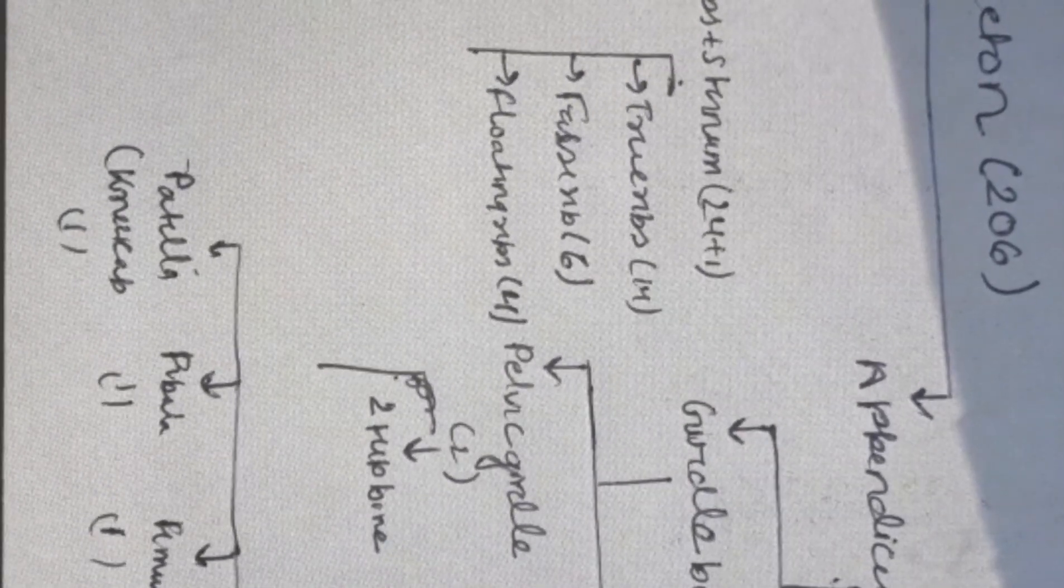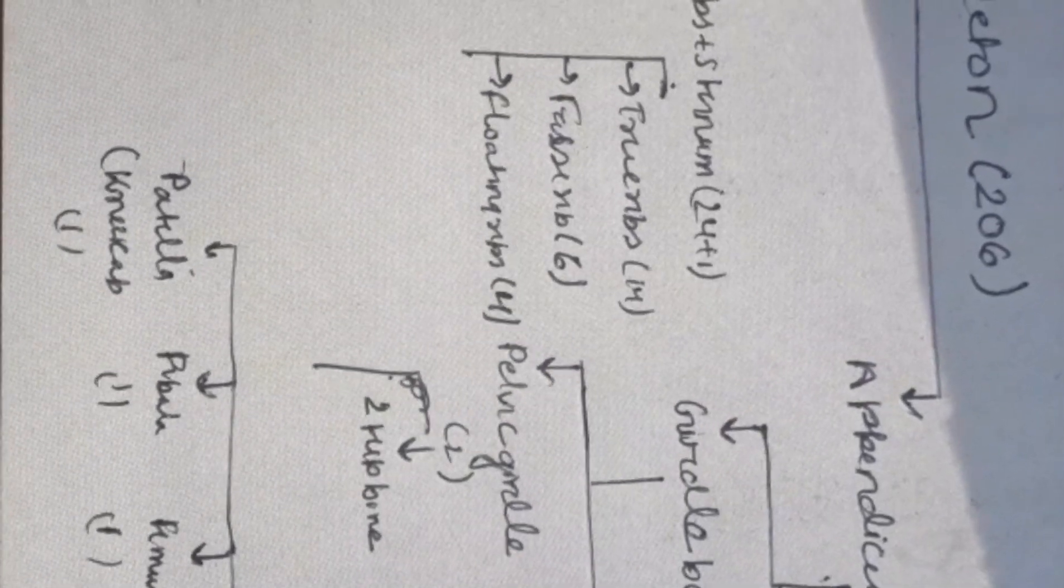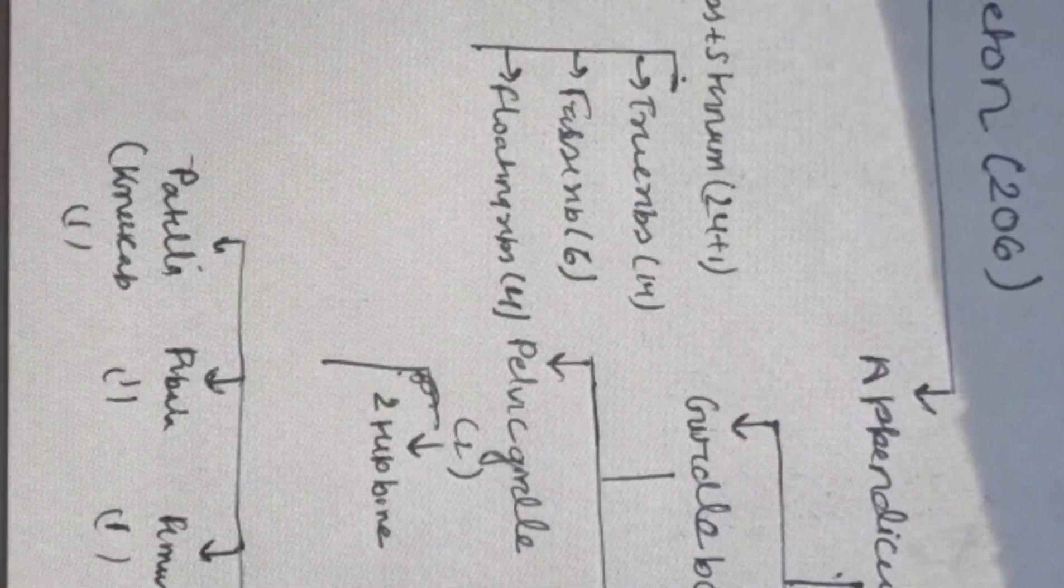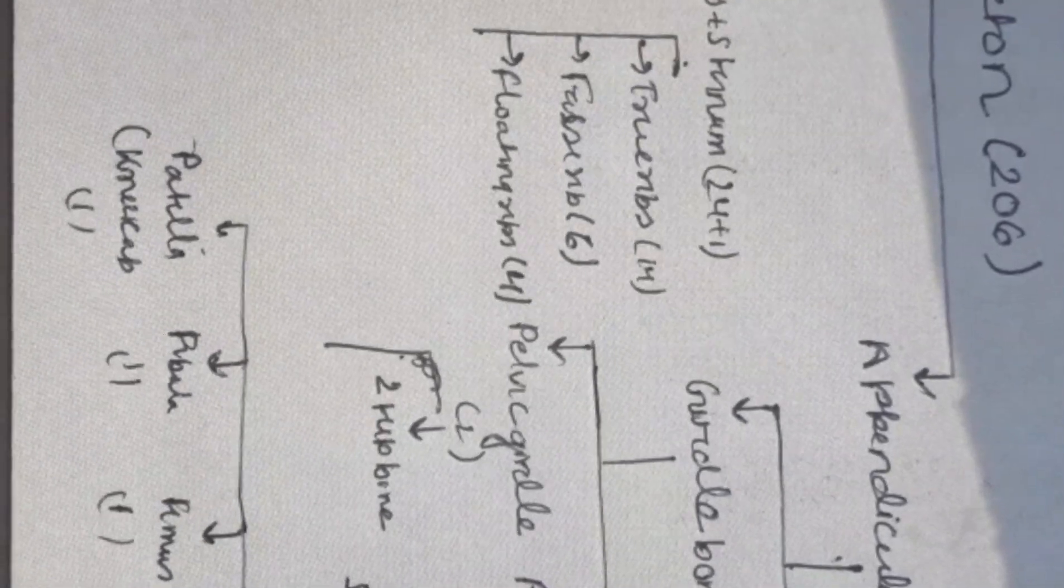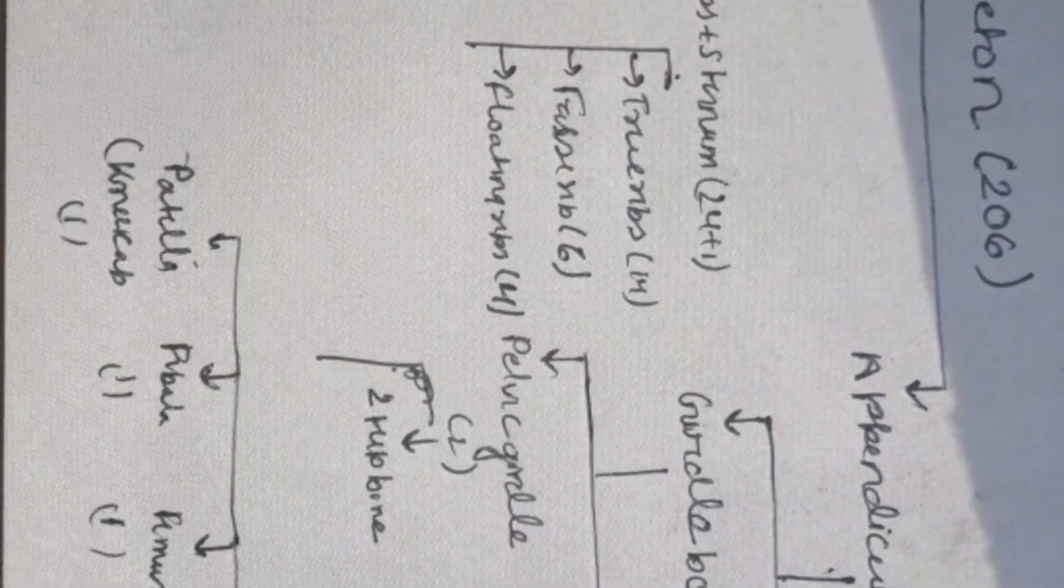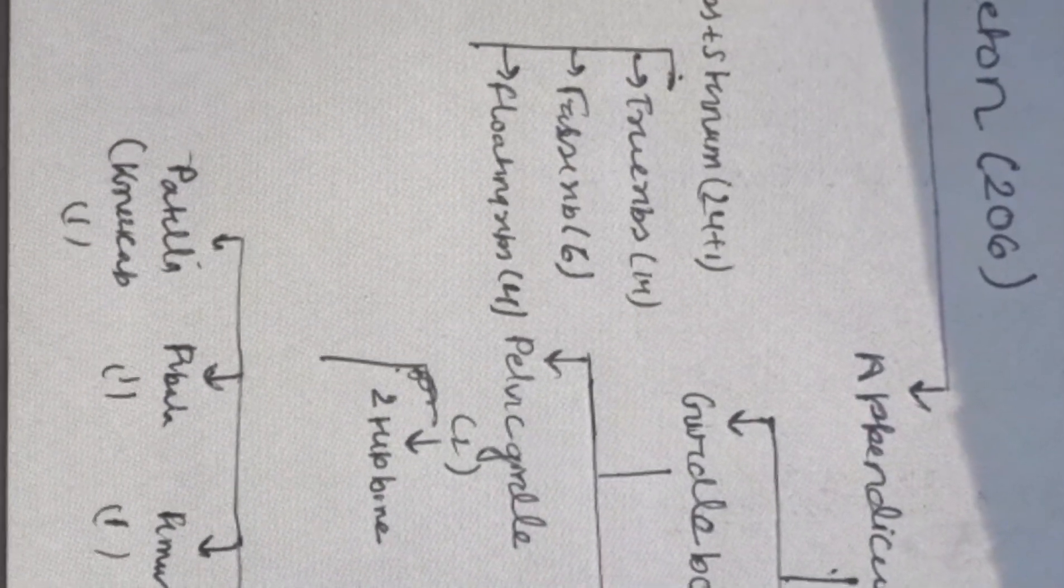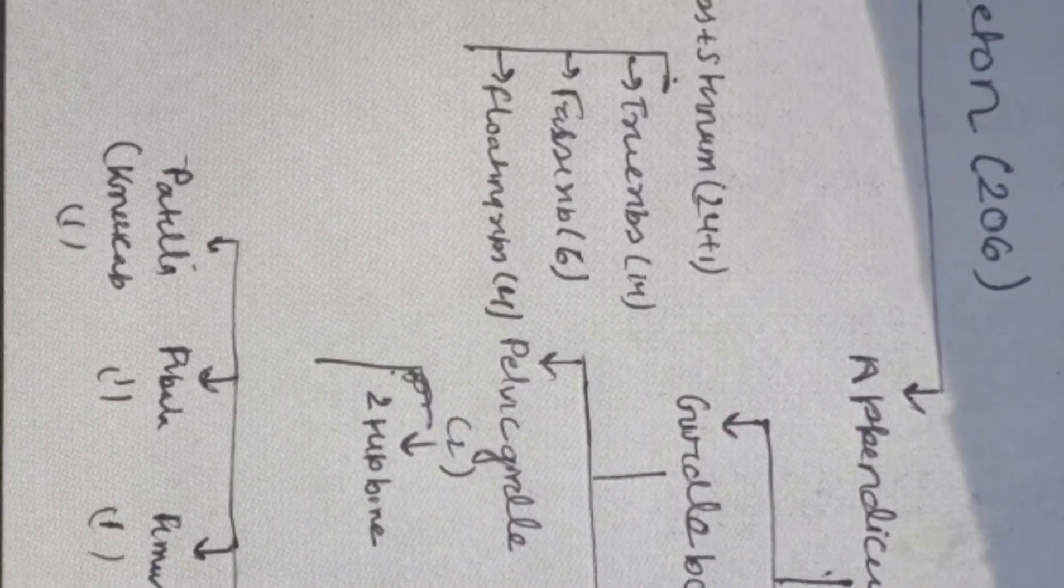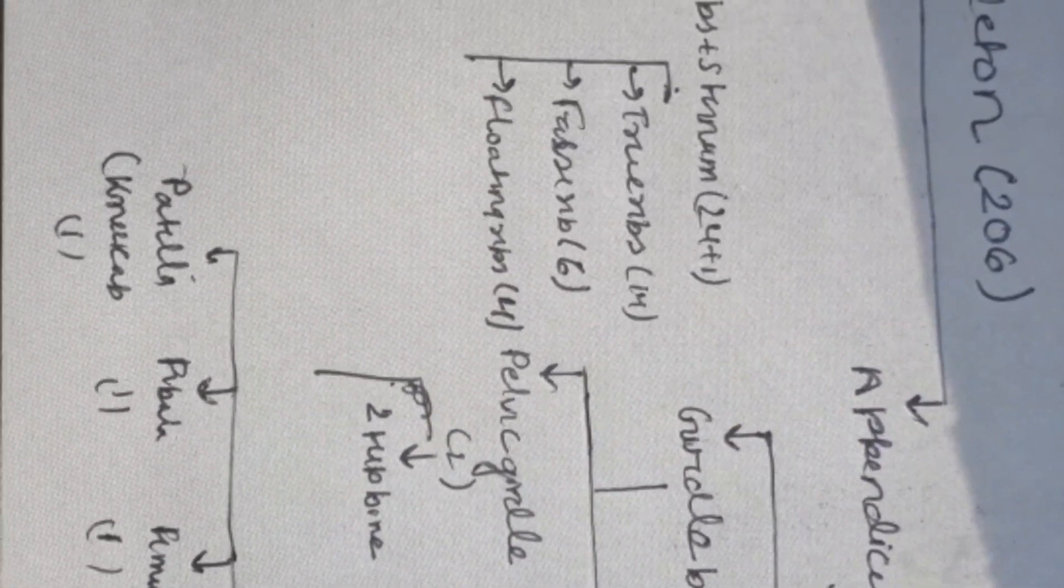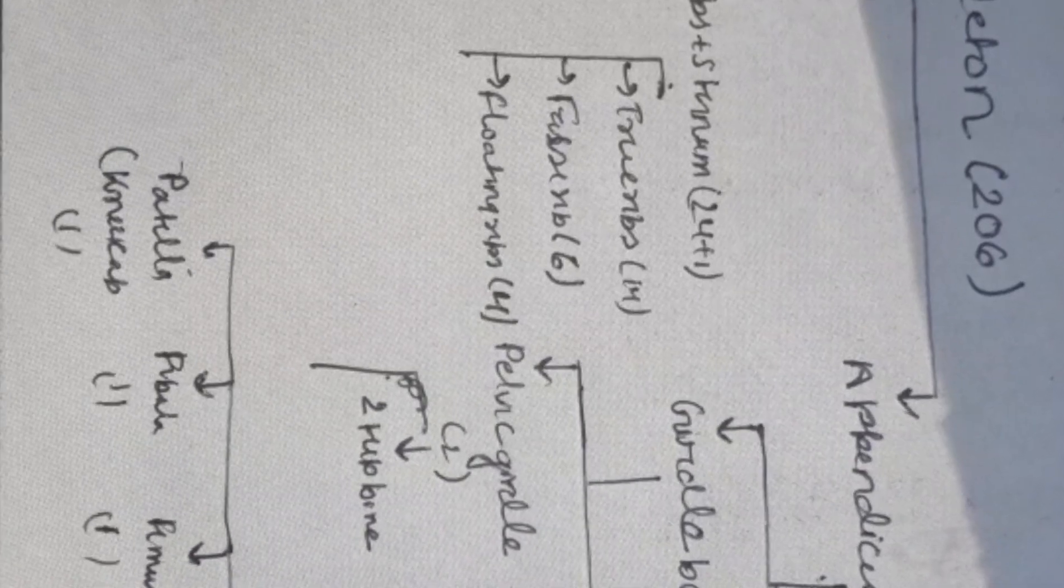Then patella, that is our kneecap, then comes tarsals which are seven in number, metatarsal five in number, and phalanges again fourteen in number. So our limb bones consist of 30 times 4, which equals 120.